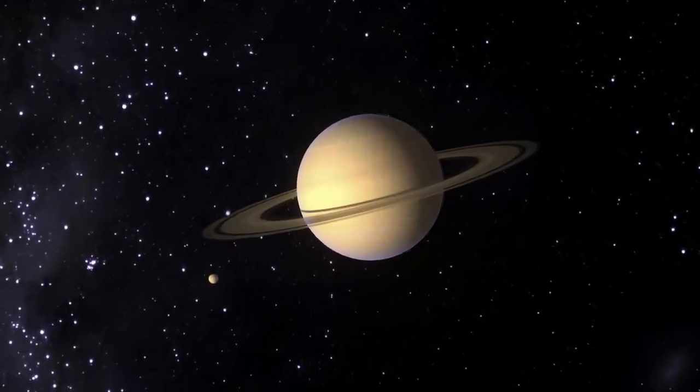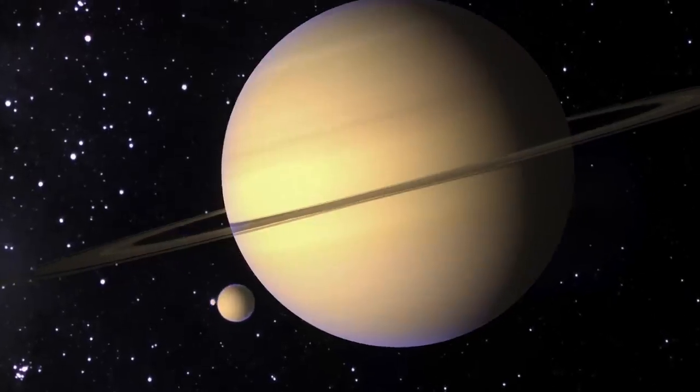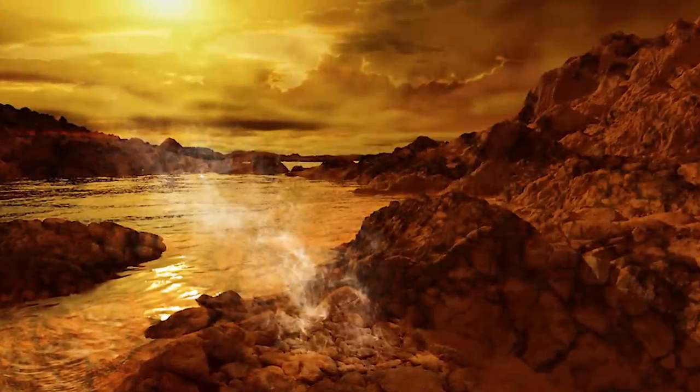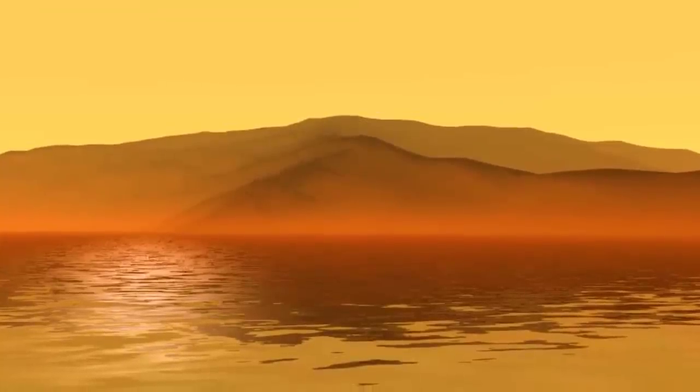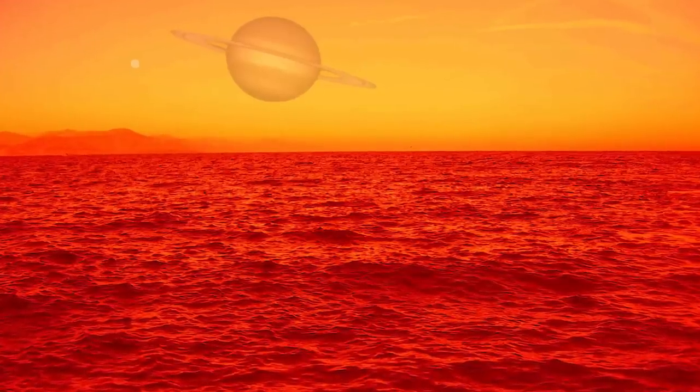A year on Titan is equal to 30 years on Earth, so its seasons are rather long. It's possible Ligeia Mare is seasonably calm during the long dark winter, while the sun's energy may drive stronger winds during Titan's long summer, and thus produce higher waves.